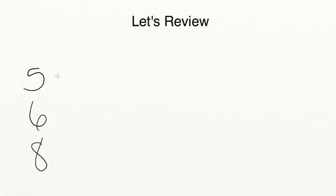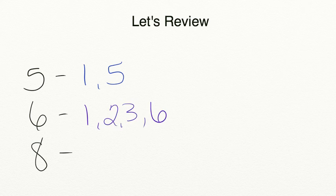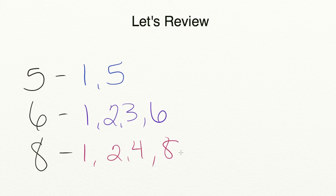Let's review what you've learned in today's lesson. When trying to find the greatest common factor of three numbers, compare all of the factors for each number and put them in order from least to greatest. For example, to find the greatest common factor of 5, 6, and 8: for 5, list 1 and 5; for 6, list 1 times 6 and 2 times 3; and for 8, list 1 times 8 and 2 times 4.